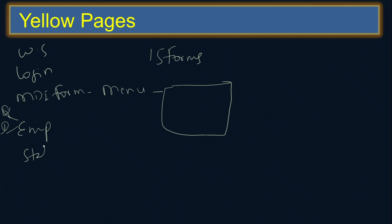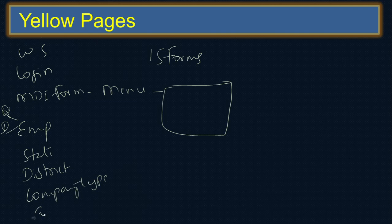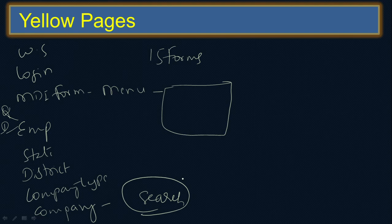For products, we track which state it belongs to, then district, then company type — what type of company it is. Next is the company details — what the company is all about. Based on that we can have a search option, so you can search immediately for any product or any company and get all the details. These are the things provided in this project.